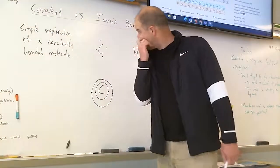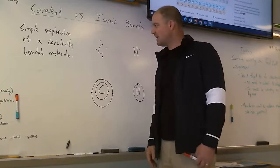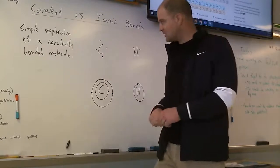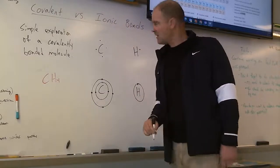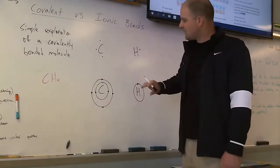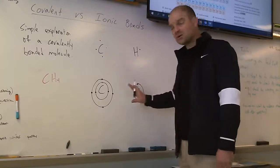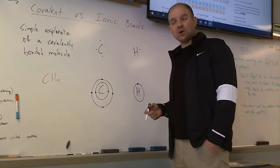Okay, so we're set up for our example, simple explanation of a covalently bonded molecule. And I always like using the example of CH4 or methane. So we've got our carbon in Lewis dot structure and hydrogen, carbon and hydrogen in our Bohr model as well. And you can see of course that carbon only has four, it wants to have eight. Hydrogen has just one, it wants to have two.